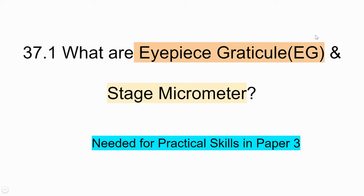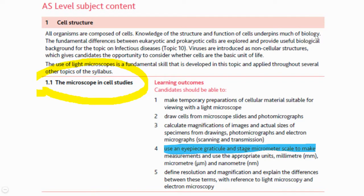In task 37.1, we will be getting introduced to two new instruments called the eyepiece graticule and the stage micrometer. You need to know about them because they will be helpful for measuring specimen size in practicals under the microscope. Moreover, you get questions around eyepiece graticule and stage micrometer in your multiple choice paper as well as your structured paper.